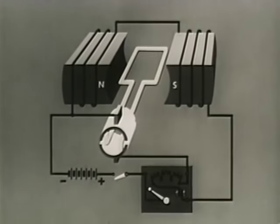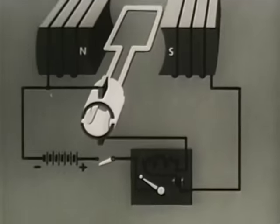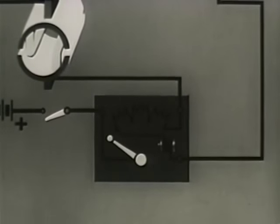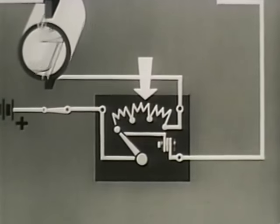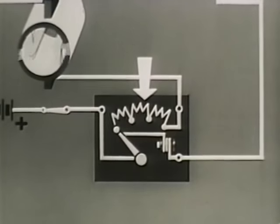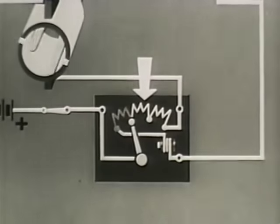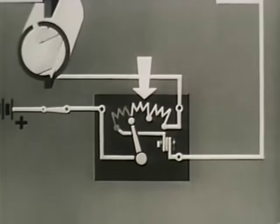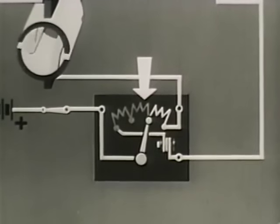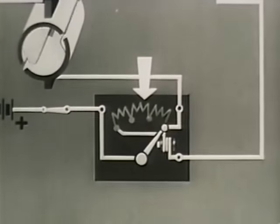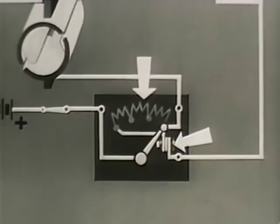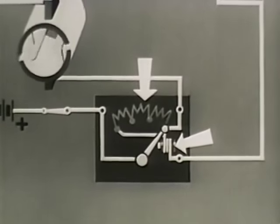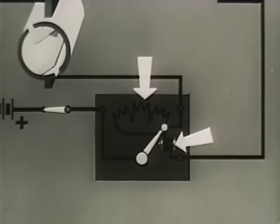Starting boxes are used with DC motors in order to avoid applying full current before the CEMF is built up. Here is a basic shunt motor with its starting box. In the starting position, the circuit to the rotor windings is closed through a series of large resistance coils. As the lever of the switch is moved, rotor speed and CEMF build up gradually and the resistance coils are subsequently cut out until running speed has been reached. The lever is held in the fully open position by an electromagnet. If for any reason the power should fail or the field coil open, the electromagnet becomes de-energized and the lever is returned to the starting position by spring action.